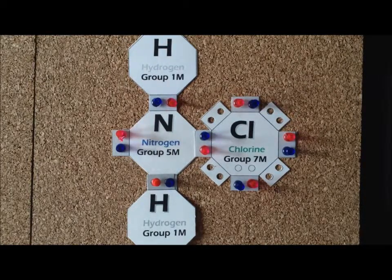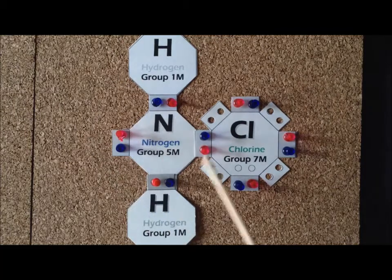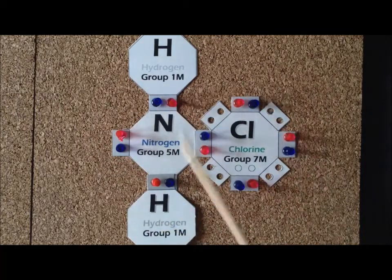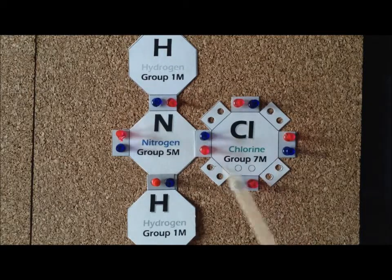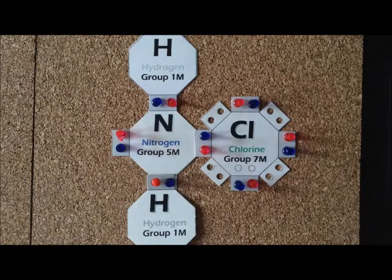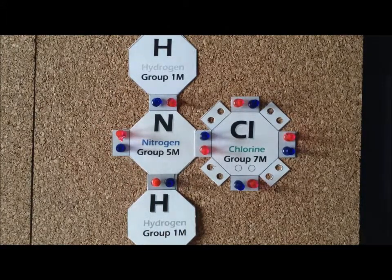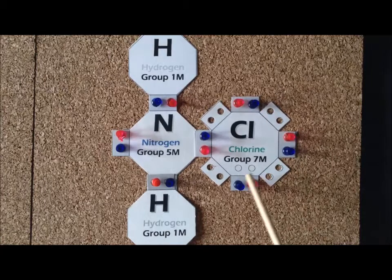We notice that we can satisfy the duet rule for each hydrogen, satisfy the octet rule for nitrogen, and for chlorine. Even though in some compounds chlorine can expand the octet, in this particular compound there is no need to do so. We simply satisfy the octet, and in the process we end up with a lone pair on nitrogen, which is typical of many nitrogen compounds, particularly the parent compound ammonia. We also notice that we have three lone pairs on chlorine.